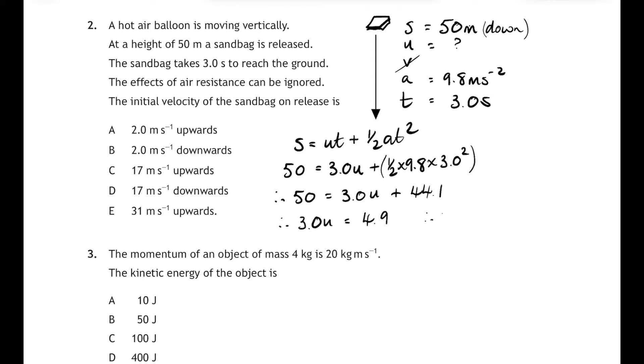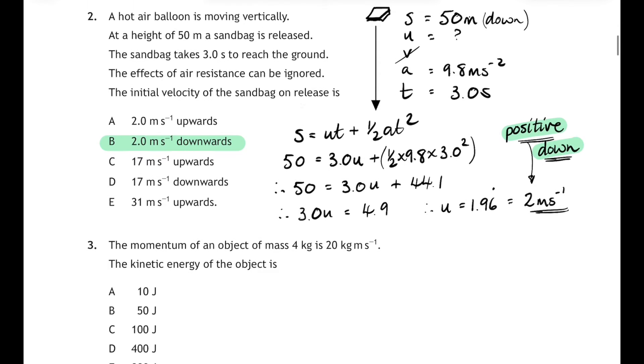So u is equal to 1.96 recurring and that rounds to positive 2 meters per second. That means the initial velocity is in the positive direction and that was downwards, so 2 meters per second downwards, and that corresponds to answer B. Now I'm doing all my rough working here on the paper. You can have as much blank paper as you like to do your rough working. It's not marked but do as much working as you need to to get to the final answer. Don't try and do them in your head.